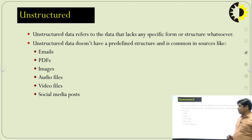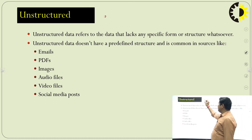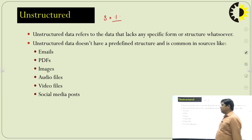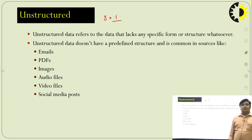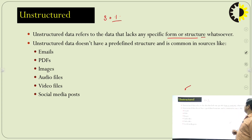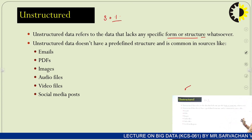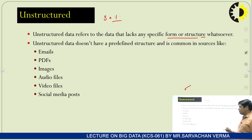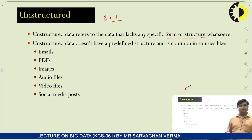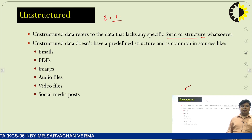What is unstructured data? This data generated by end users is 80 percent of all data. Basically, unstructured data refers to data that lacks any specific form or structure whatsoever. Unstructured data does not have a predefined structure and is complex. The common sources of unstructured data are email, PDF, images, audio files, video files, and social media posts.